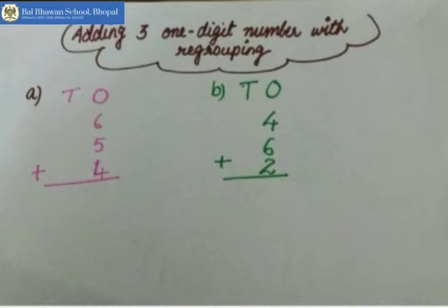See the first example: 6, 5, and 4. Three numbers, but they are single digit numbers, one digit numbers. Add this. What is the biggest number? Which is the biggest number among them?